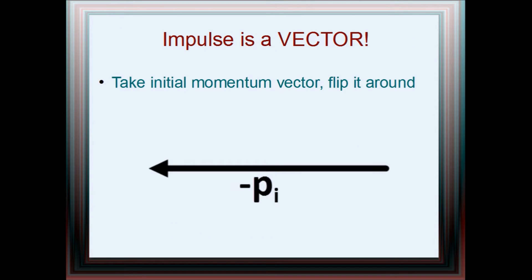Because momentum is a vector, impulse is also described by a vector. It is found by subtracting the initial momentum from the final, so you have to subtract two vectors to find it. How do we subtract vectors again? First, we take the initial momentum arrow and flip it around so we get negative p initial.